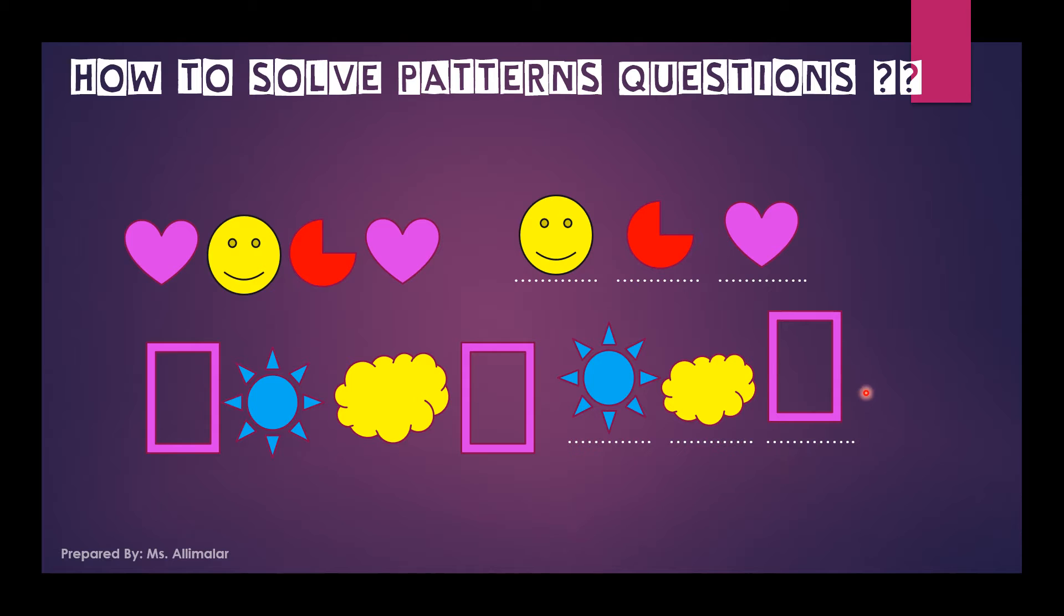Okay, so this is the question. Very simple. You have a pink colored heart shape emoji, a smile shape. Heart, smile, what shape is this? This is a 3 over 4 fraction. Heart, smile, 3 over 4 fraction, again heart.